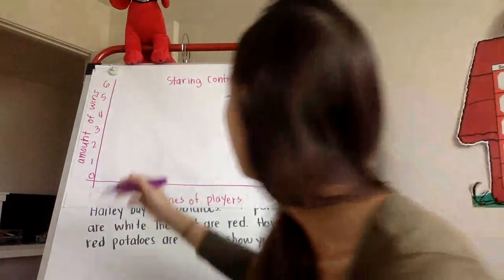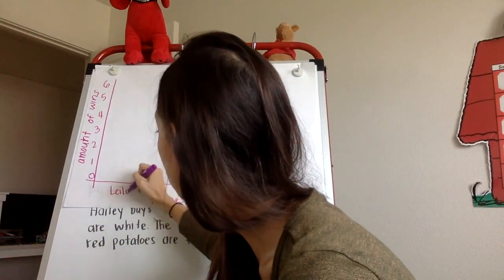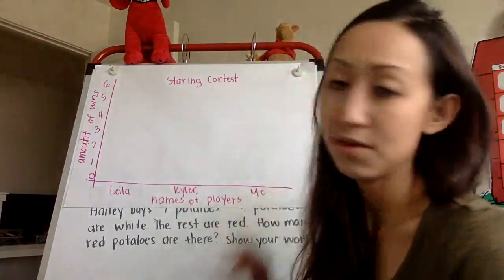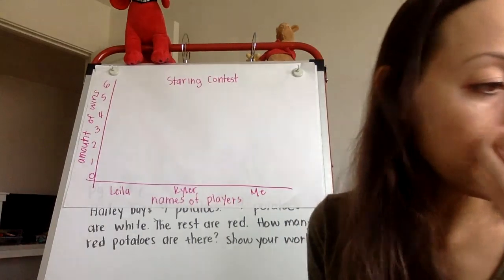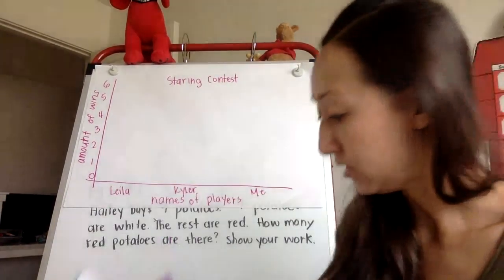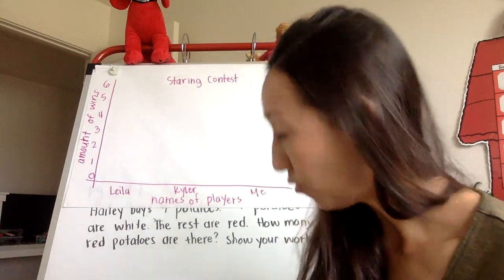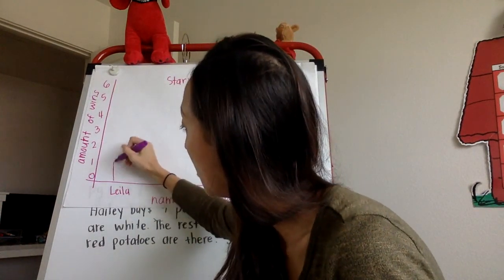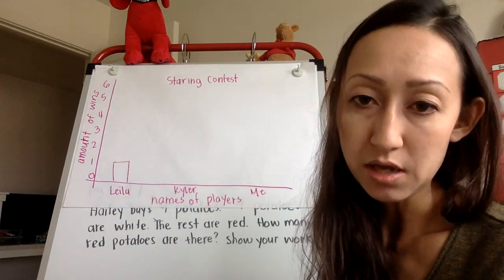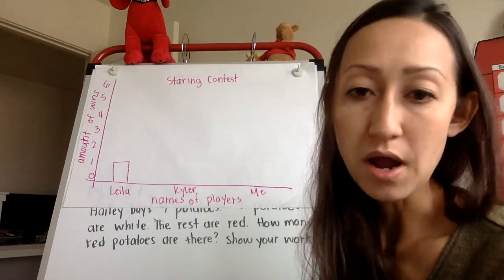Three people played in my game. We had Layla, we had Kyler, and there was me. So I will share with you the data. It turns out that Layla won once, and so I'm going to draw her bar graph all the way up to the number one. You might want to use lined paper. It might help make your bars more accurate.